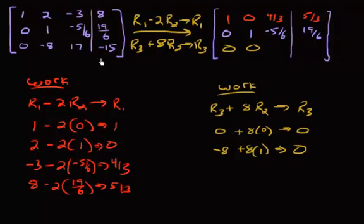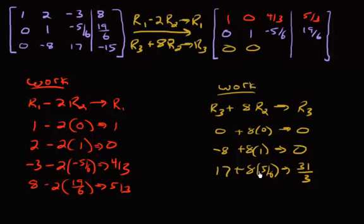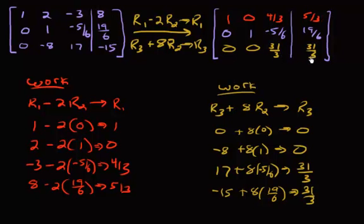Then we're going to get 17 plus 8 times 5/6, and that's going to give us 31/3. If you put that into your calculator, you're probably going to get a decimal — 10.333 and so on — but you want to change that back into a fraction. So we're going to get 31/3, and then 15 plus 8 times 19/6 right there, and that is also going to give me 31/3. So we got 31/3 and 31/3.